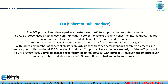CHI — Coherent Hub Interface — is the highest version of the AMBA protocols, developed as an extension of AXI to support coherent interconnects. It uses single-level communication between master and slave, requiring a large number of wires with added channels for snoops and responses. CHI works well for small coherent clusters including dual and quad-core mobile SoC designs. It uses a layered, packet-based communication where protocol, link, and physical layers support quality-of-service based flow control and retry mechanisms.